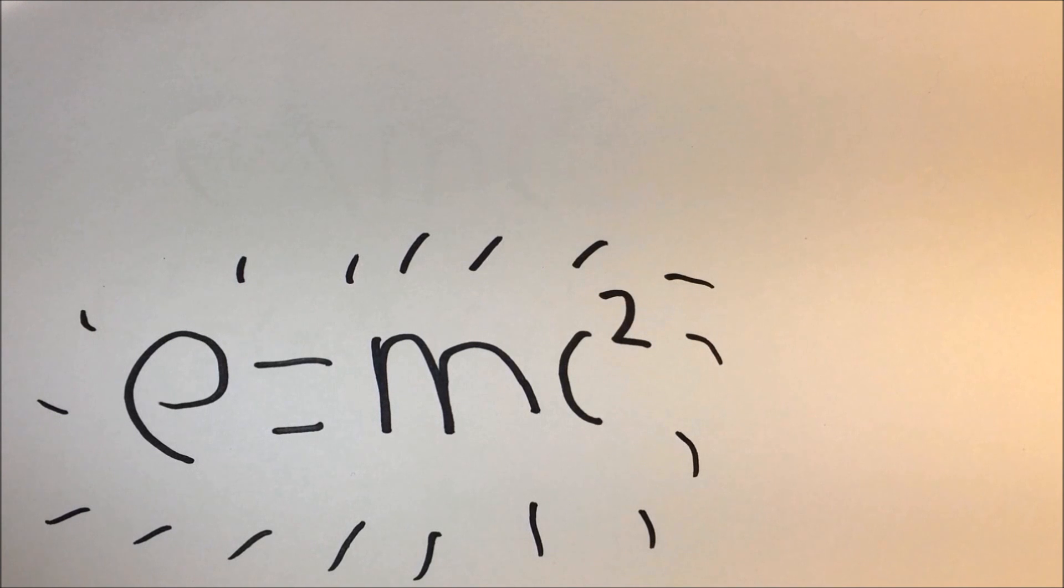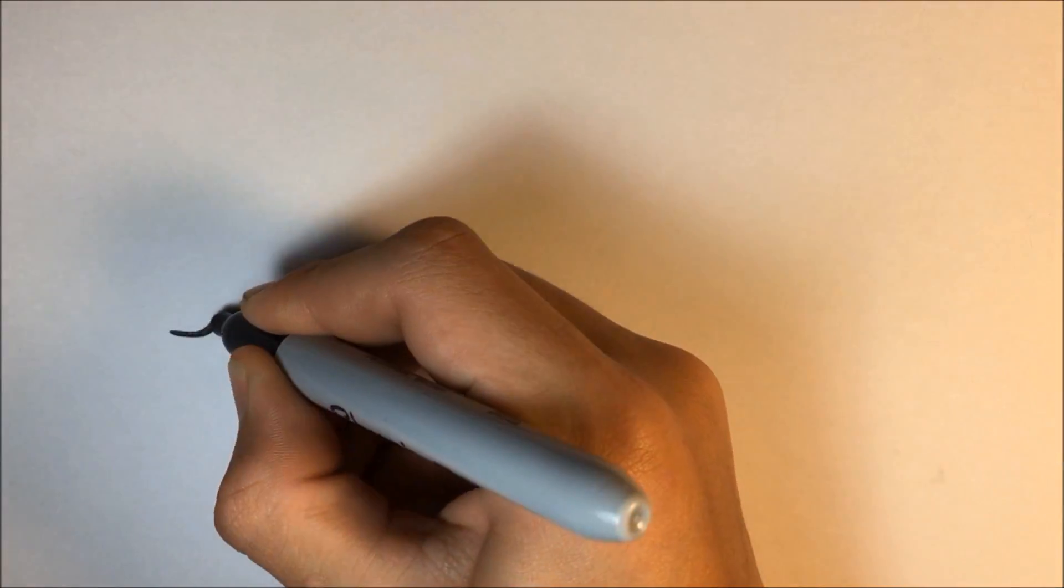So black holes emit matter because there is a lot of energy. Well, it's not that simple. When energy is converted into matter, it always comes in pairs of matter and antimatter particles.